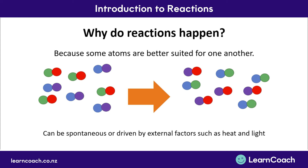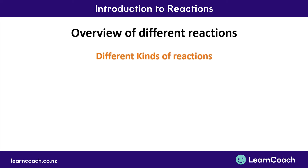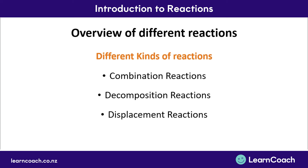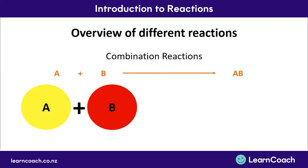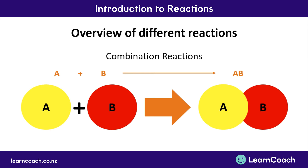Now we know what reactions are and why they happen, but we also categorise different kinds of reactions. Let's run through a brief overview of the different types: combination reactions, decomposition reactions, displacement reactions, and precipitate reactions. A combination reaction occurs when two elements or compounds combine together to form a single new compound, such as A plus B going together to form AB.